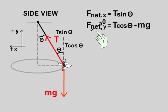So F net y is zero. And we know that F net x is the mass times the acceleration of the object by Newton's second law. So let's write down two equations, ma equals T sine theta from F net x.